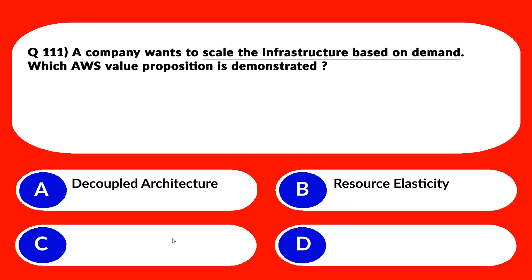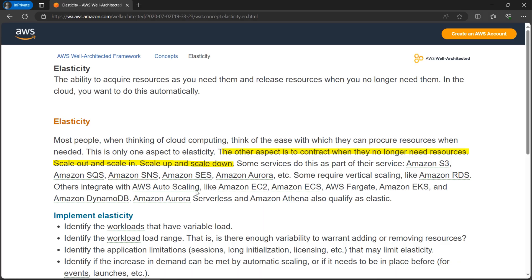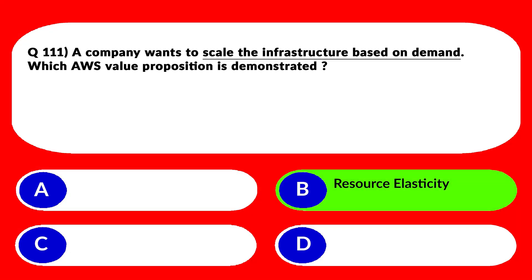Let's look at option A. A says decoupled architecture. Decoupled architecture is the opposite of monolithic architecture — decoupling means that the resources should work independent of each other. Again, this is irrelevant as per the question, so we'll reject this. We are left with resource elasticity. If we look at the official documentation, it's written the other aspect is to contract when they no longer need resources — scale out and scale in, scale up and down. That's what elasticity is. We'll lock option B, resource elasticity, as the correct answer.